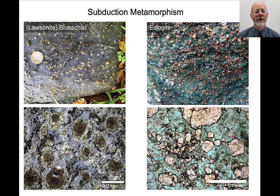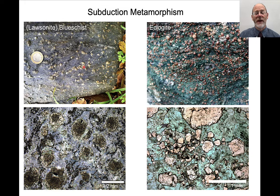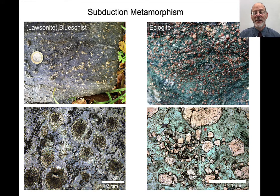Rocks that form in subduction zones are characteristically blueschists and eclogites. The blue color comes from blue amphibole, glaucophane, and the light-colored crystals are lawsonite, a high-pressure, low-temperature mineral. In thin section, blueschists show lots of blue amphibole and garnets. Eclogites contain red garnet and green sodium-rich clinopyroxene, also visible in thin section.